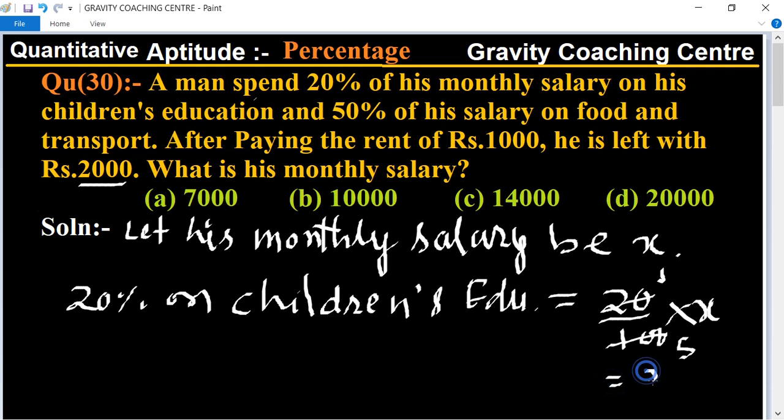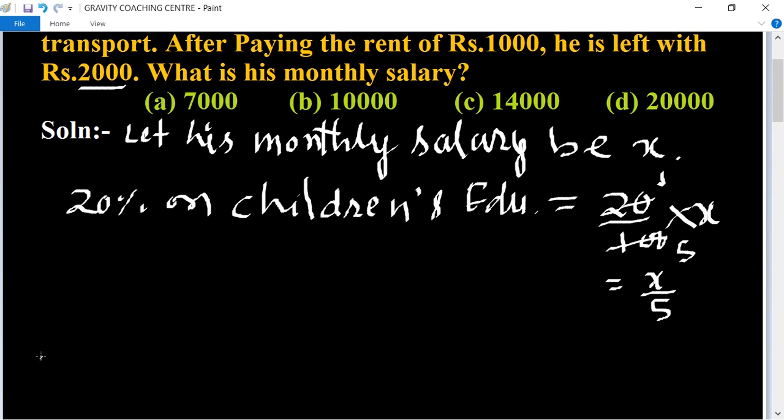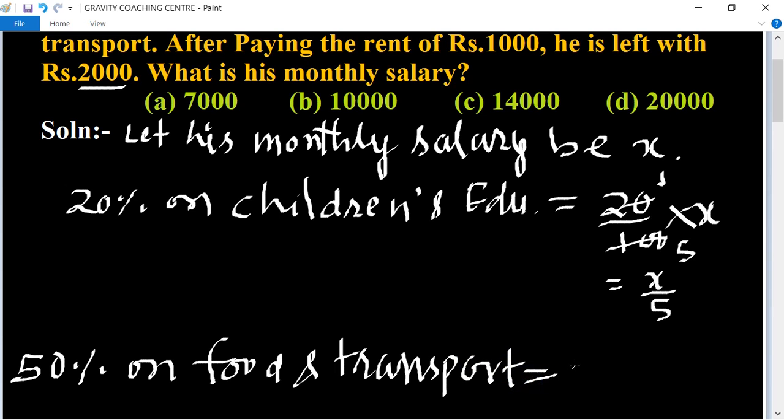And 50% of his salary on food and transport. So 50% on food and transport, food and transport, equal to 50% of X, which equals X upon 2.